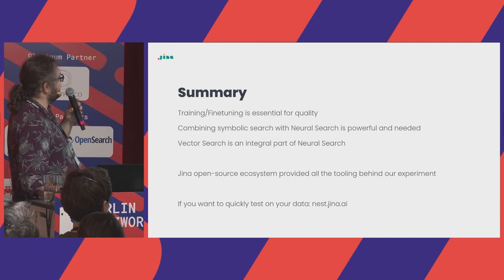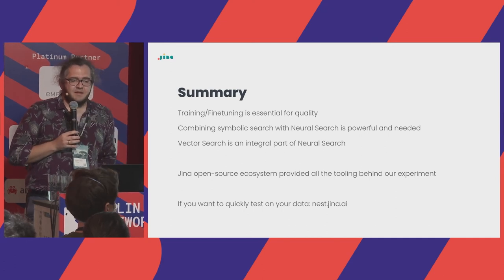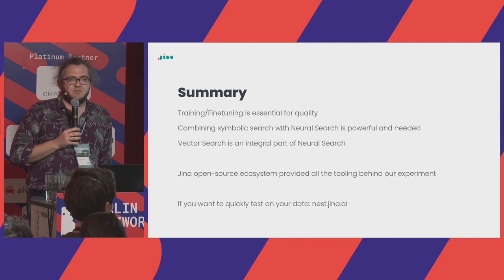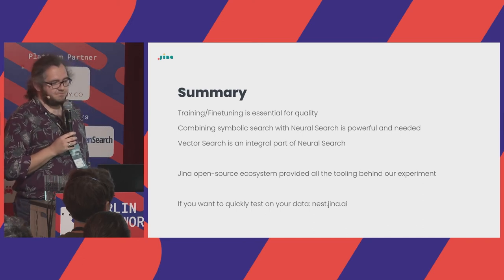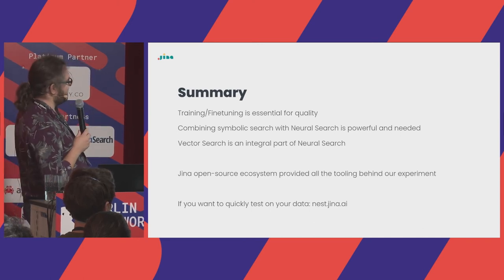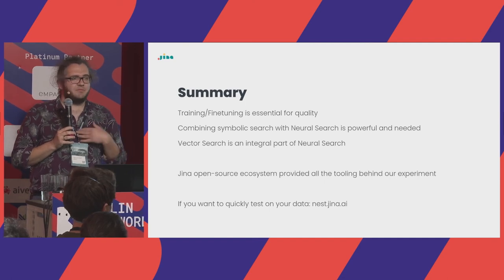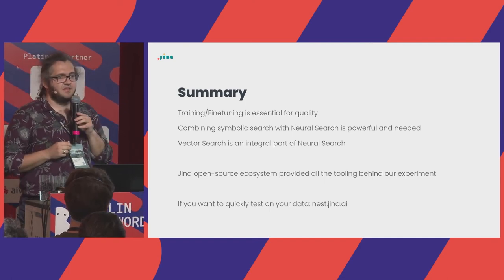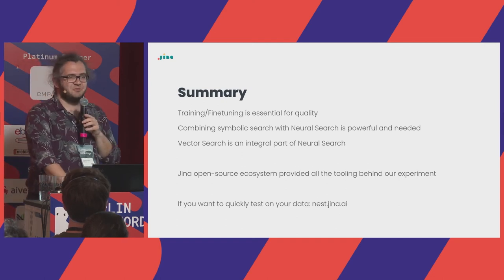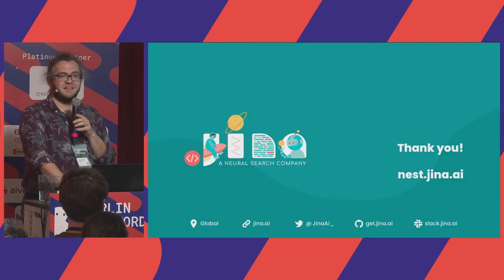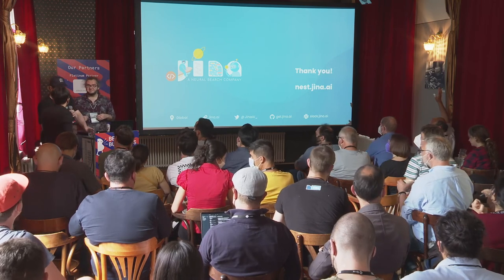Quick summary: training and fine-tuning whenever you do vector or neural search is essential for better quality. Combining symbolic search with neural search is really powerful and you should combine them. From my perspective, vector search is an integral part of neural search. The Jina open source ecosystem provided all the tooling behind our experiment — everything is open source and can be used by anyone. If you want to test our approach on your data, please contact us.